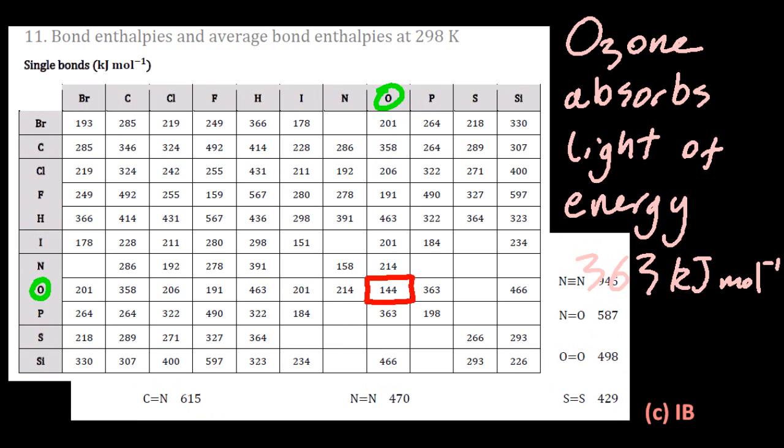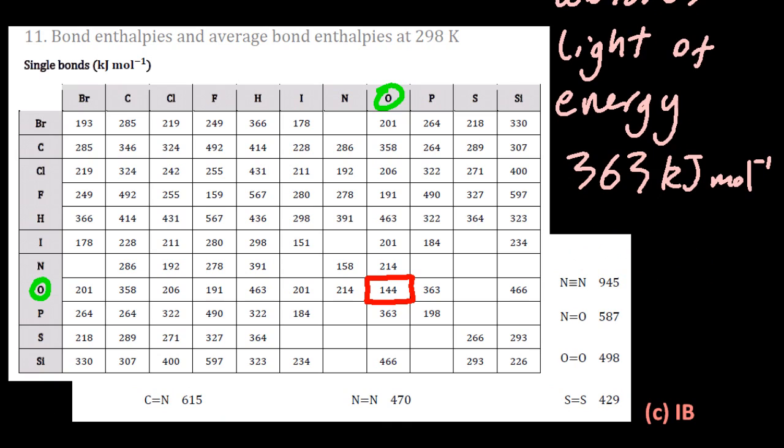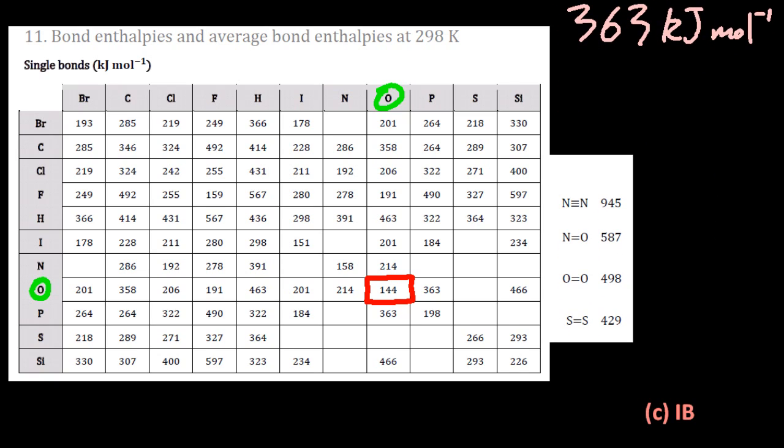Well oxygen can also form double bonds, and the oxygen-oxygen double bond you can see there is 498 kilojoules per mole. So that doesn't correspond to the bonding in ozone either, and there is no such thing as an oxygen-oxygen triple bond or quadruple bond. So what's going on?